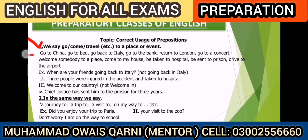For example: 'I am going to China.' 'My friend is going to bed.' 'I went back to Italy.' 'Why don't you go to the bank?' 'My father will return to London.' 'Why don't you go to a concert?' These are different usages of the preposition 'to' with verbs of movement.